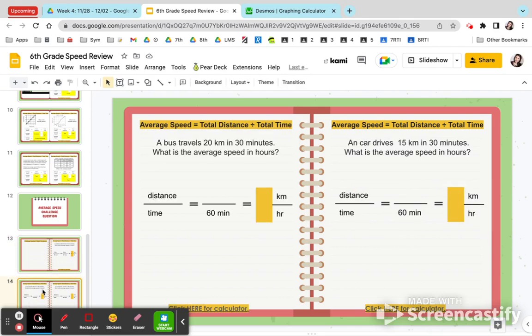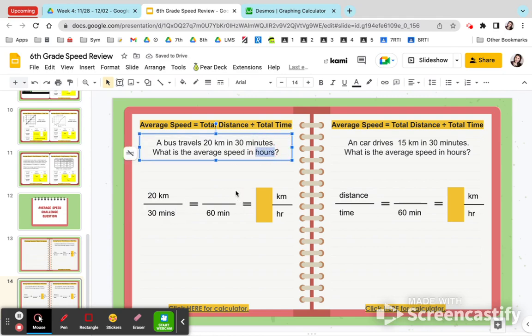All right, let's do one more example. So here we have a bus which is traveling 20 kilometers in 30 minutes. So 20 kilometers, 30 minutes. Again, we want to know the average speed in hours, not minutes, in hours.